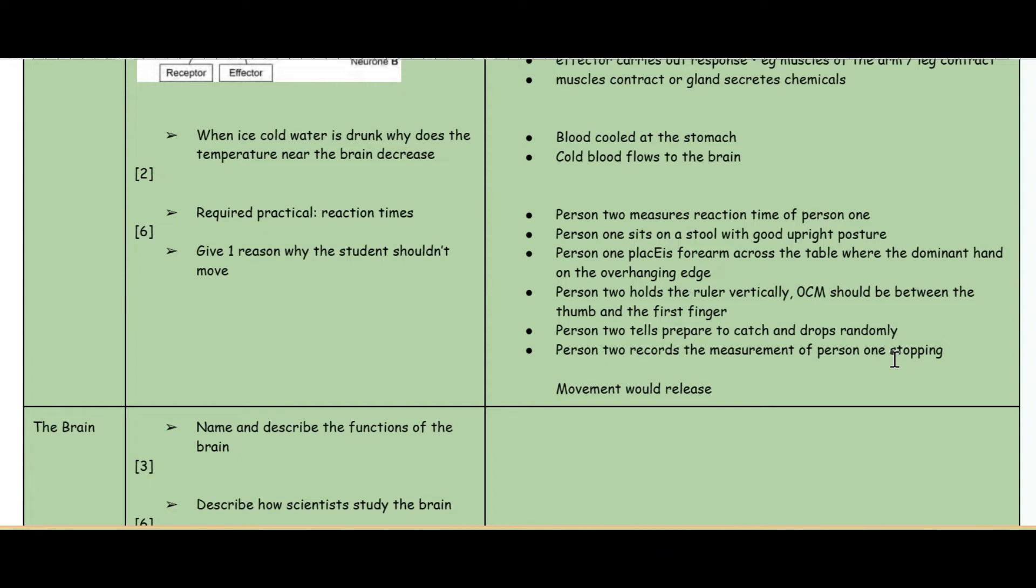Person two then recalls the measurement of person one stopping. An alternative way to do this is instead of looking at the measurement on the ruler, start the stopwatch and then stop the stopwatch. But that's subject to human error, whereas if you hold a ruler, the place where you stop is exactly your reaction. The student shouldn't move because movement would release heat and that would affect the reaction.